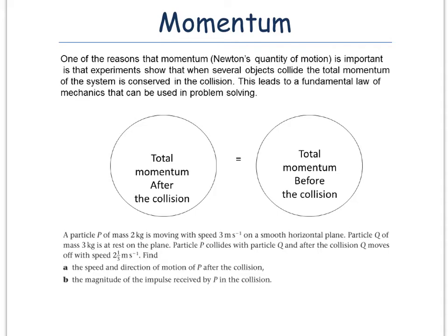So this in algebraic terms is M1V1 plus M2V2 equals M1U1 plus M2U2. And that equation is really important. It often asks you in the exam to use that equation to find either a missing speed or velocity or to find a missing mass.